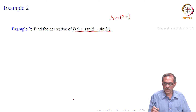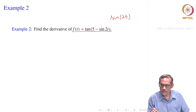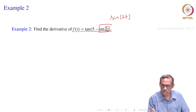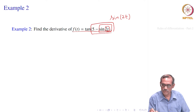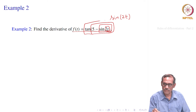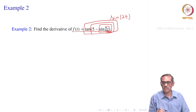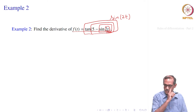So now, what happens here? There is a series of compositions. First t to 2t, next 2t to sin 2t, next 5 minus sin 2t, and then tan of that. There is a series of compositions here.